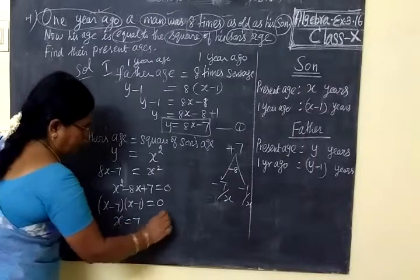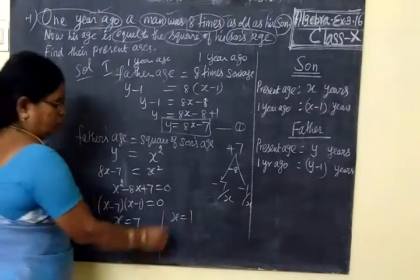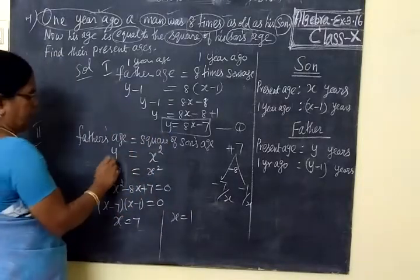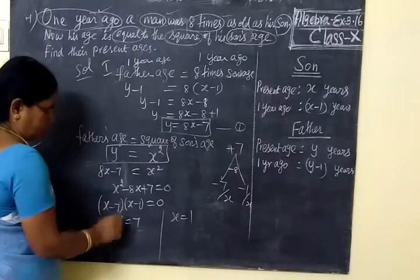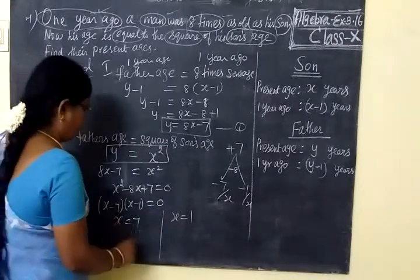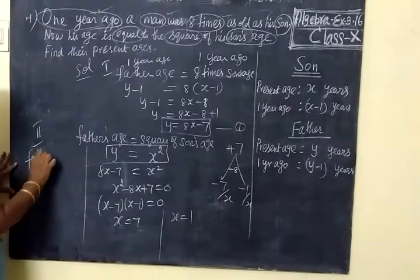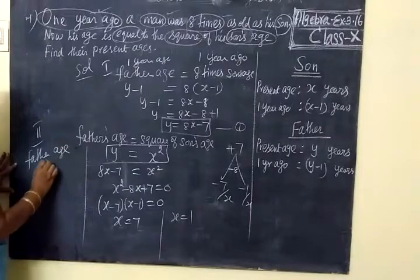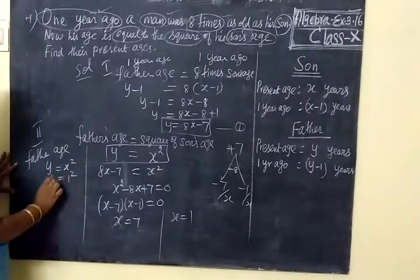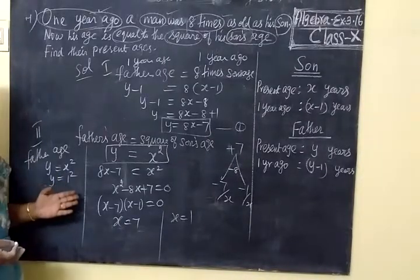So x equal to 7, or x equal to 1. This value you have to take and substitute. For son, age equal to 1, this answer will be checked. Then father would be 1. That's not valid. This is not usable.